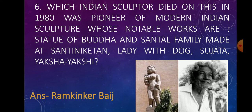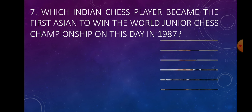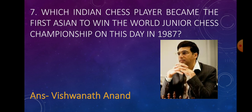The image shown is the Yakshi at the Reserve Bank of India, New Delhi. Question number seven: which Indian chess player became the first Asian to win the World Junior Chess Championship on this day in 1987? Answer: Viswanathan Anand.